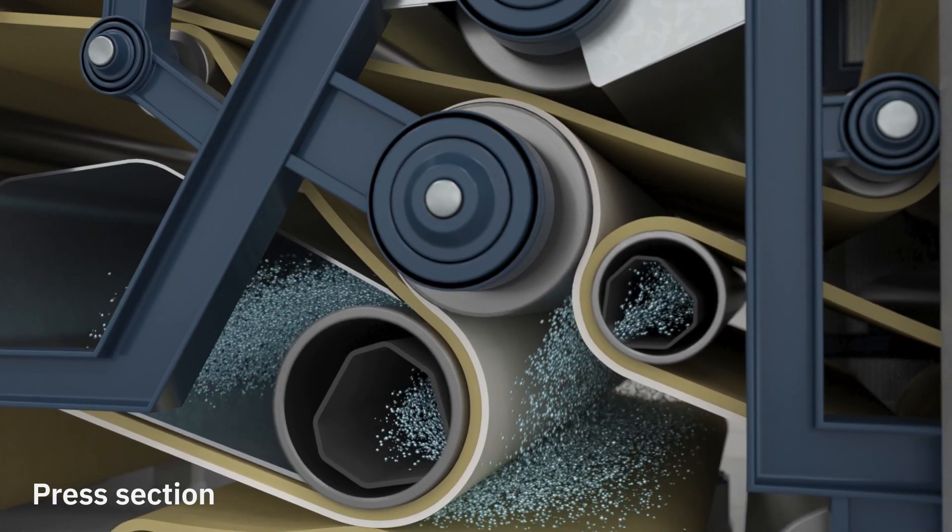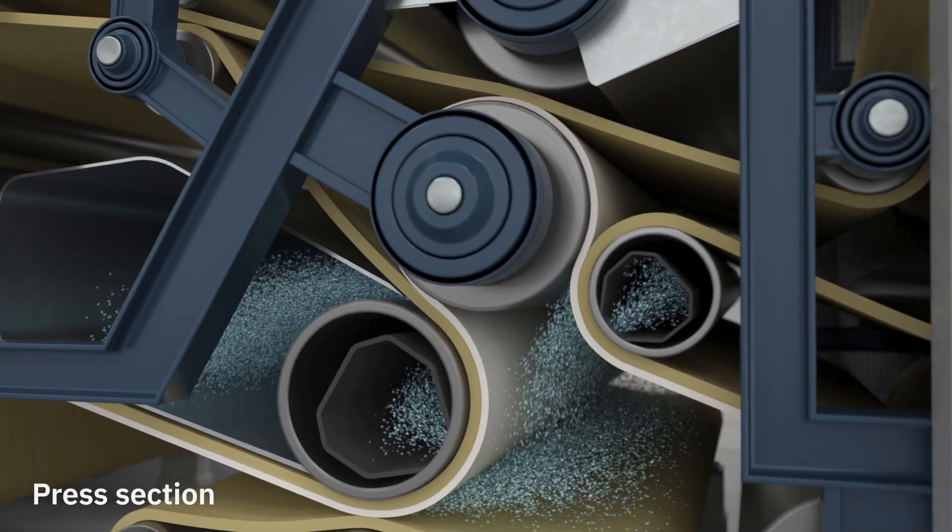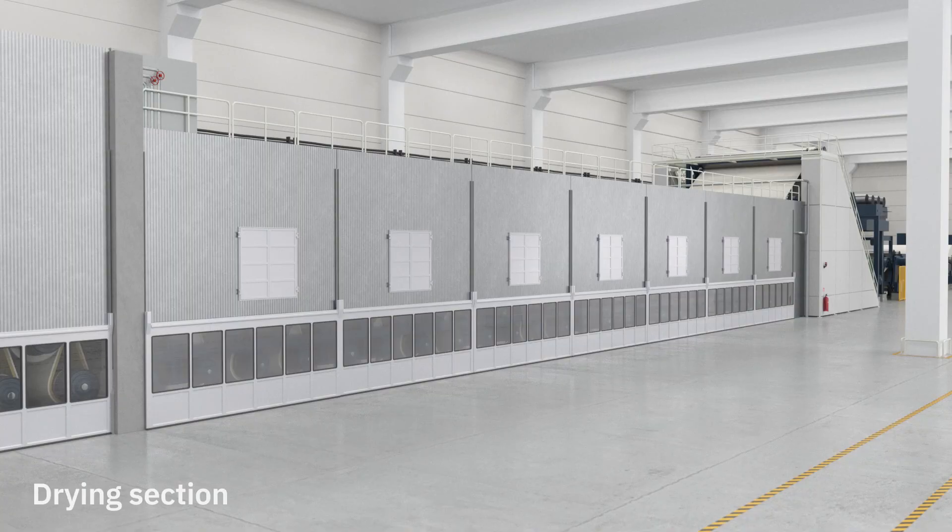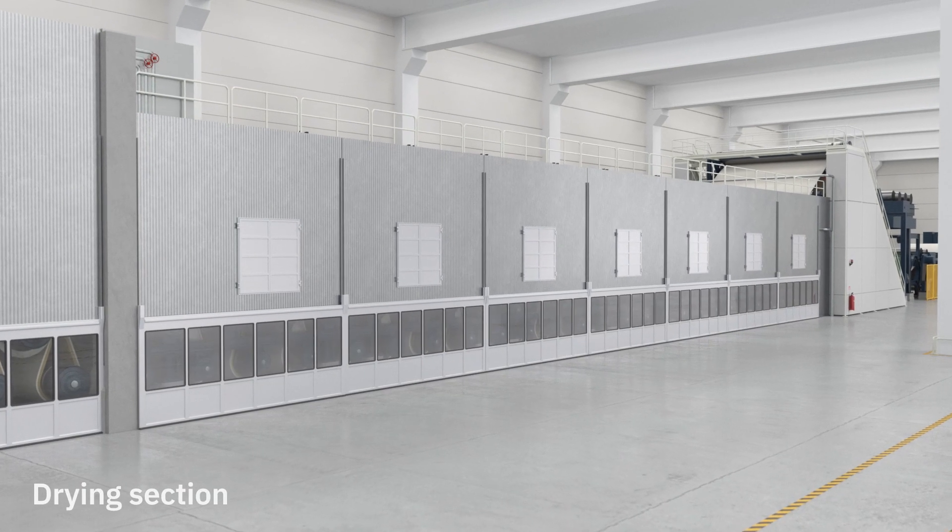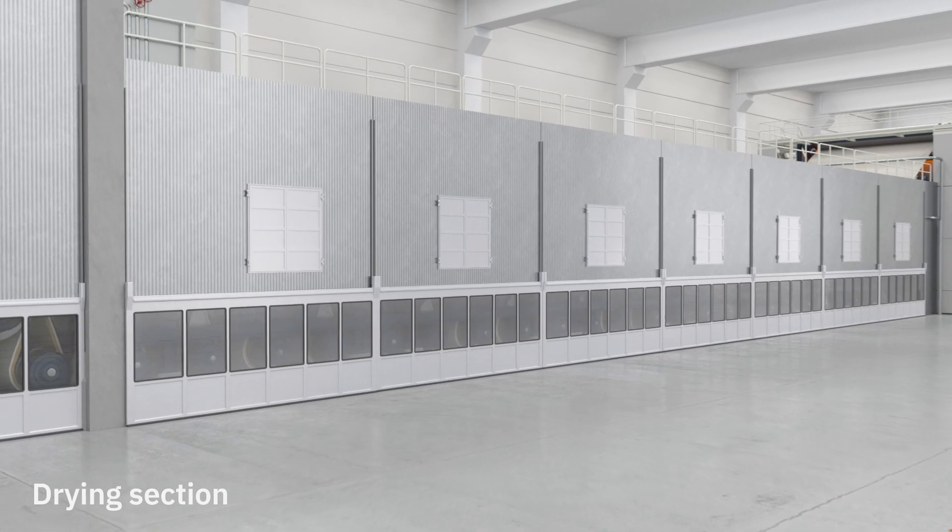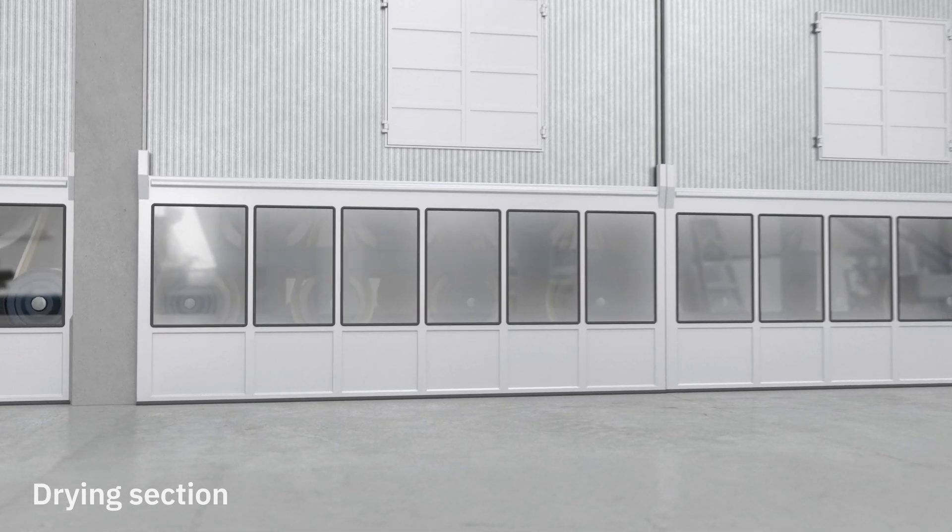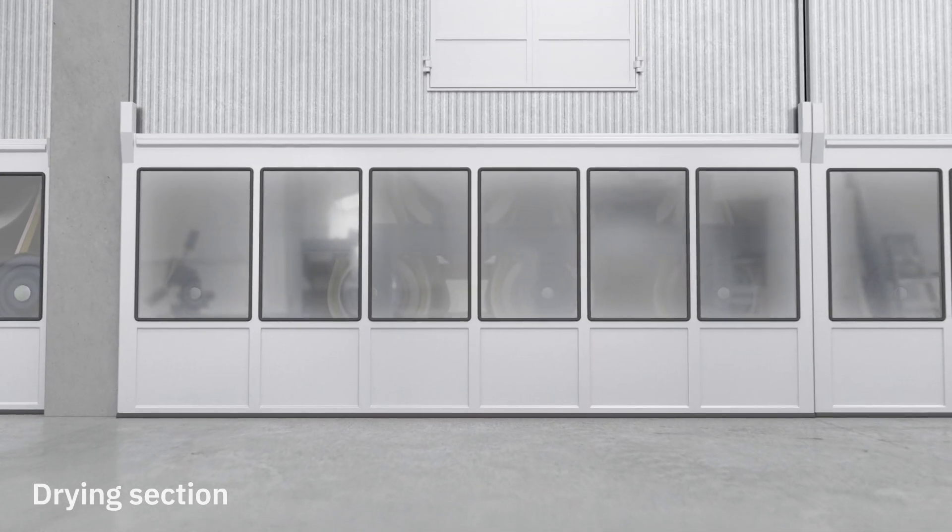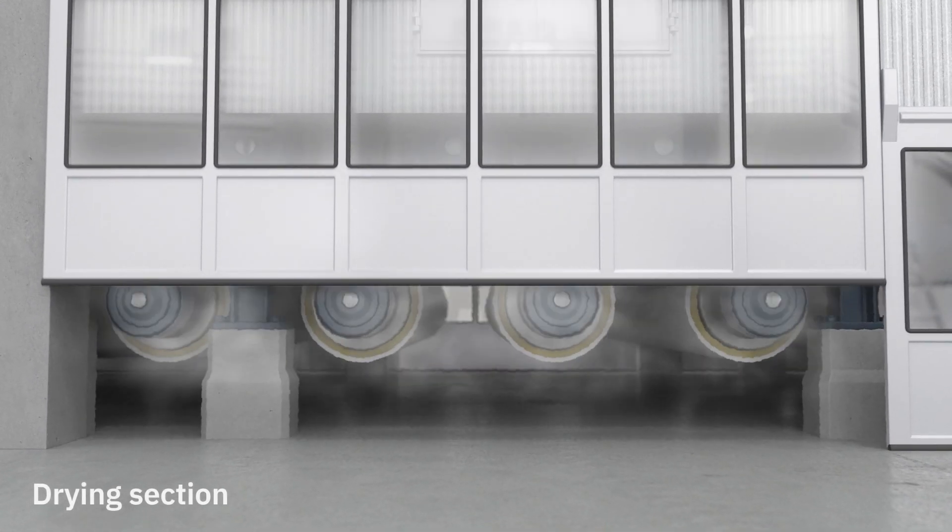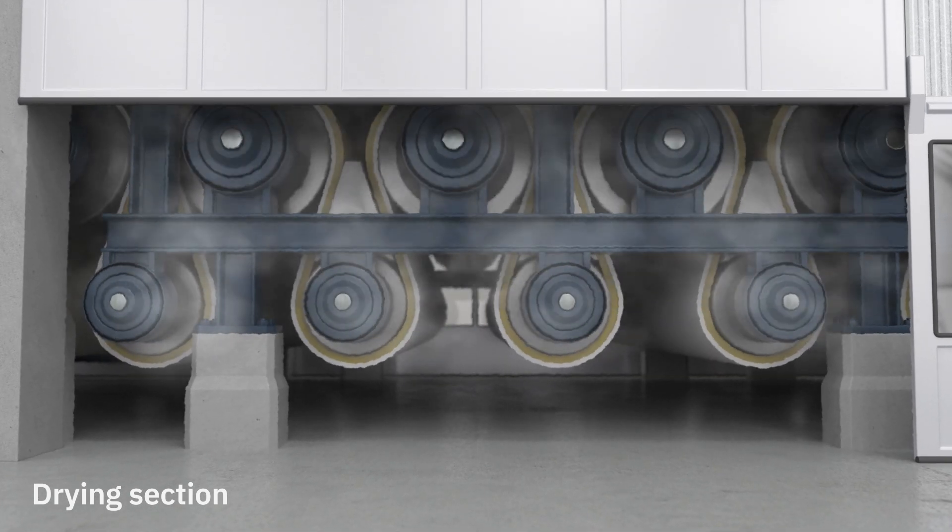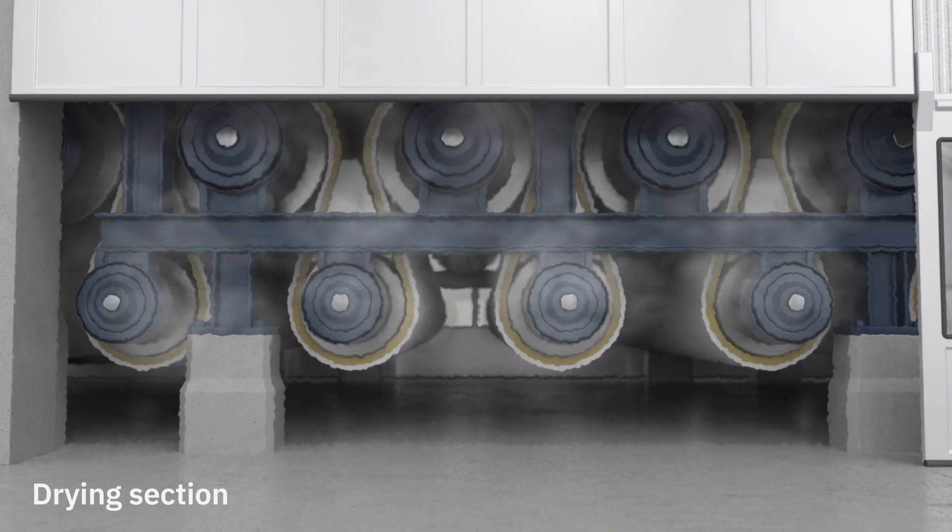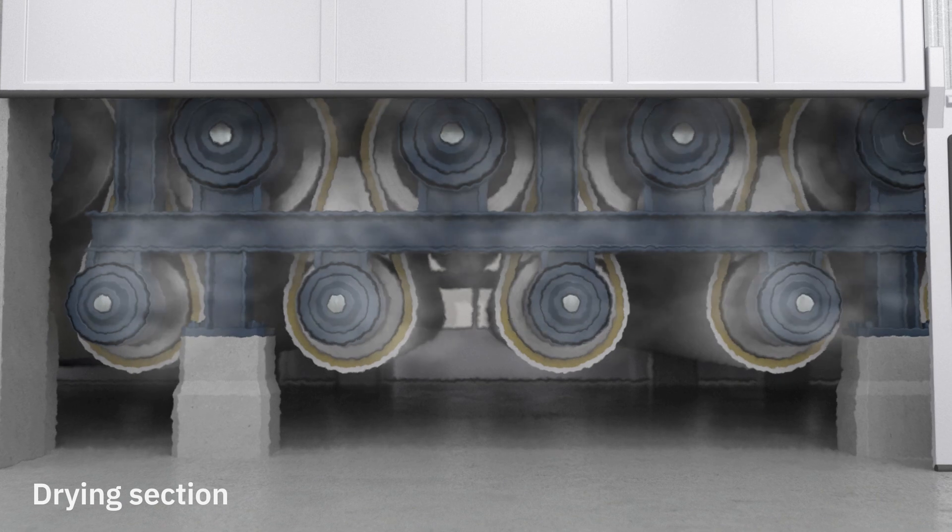The drying section is the longest part of the paper machine and consists of 31 steam-heated cylinders that slowly dry the paper to its final moisture content of 7-8%. The cylinders are heated with steam created earlier in the refiners and has a temperature of 135 degrees Celsius.